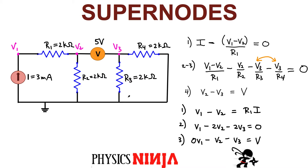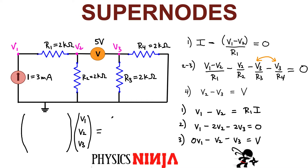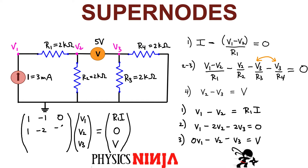This is a linear system of equations that can be written in matrix form. The coefficient matrix A acting on column vector [V1, V2, V3]ᵀ equals the right-hand side column vector [R1·I, 0, 5]ᵀ. The matrix A has coefficients: row one is [1, −1, 0], row two is [1, −2, −2], and row three is [0, −1, −1]. Now we simply solve this linear system to get the nodal voltages — this is exactly the kind of real-life application where linear algebra is useful.